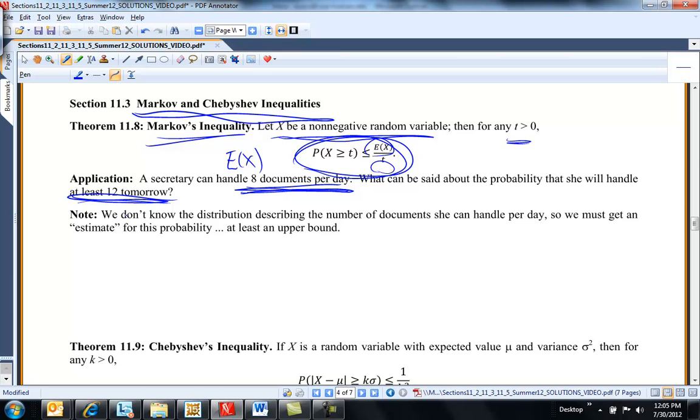The best I can do is get an estimate. We don't know the distribution. So, what's the probability that she can finish more than 12 documents tomorrow? That's less than or equal to, we expect her to be able to do 8 divided by T, which is 12, so 8 over 12 equals 2 over 3. So the probability that she finishes at least 12, there's a two-thirds chance. It's just an estimate, that's all that is.